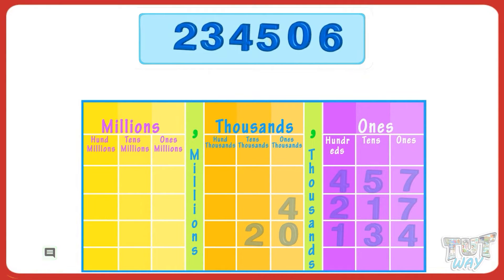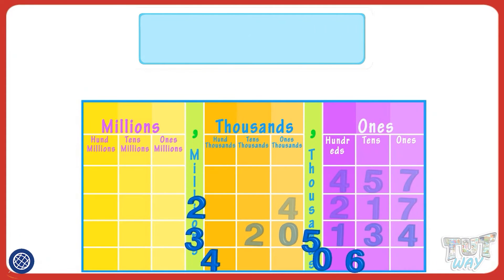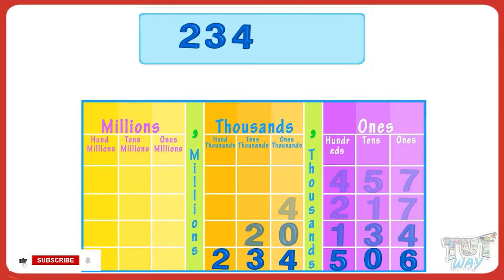Now let's read a six-digit number. Here we have a number — write it below the place value chart, starting with the ones place, like this. Now let's read the number. You have to read the numbers separately from all periods.